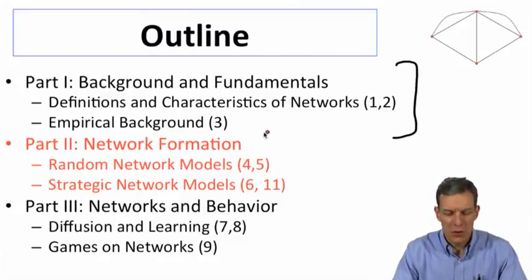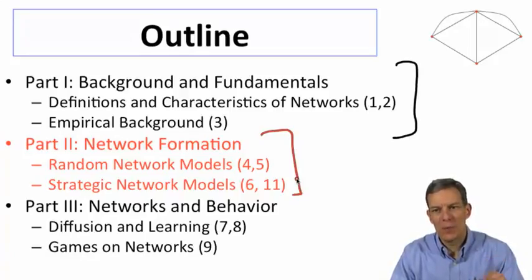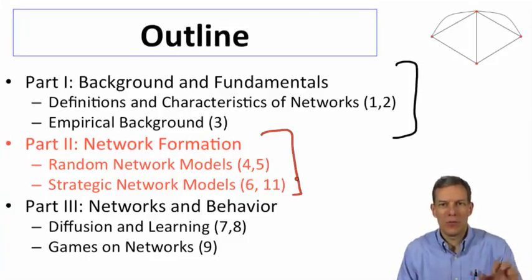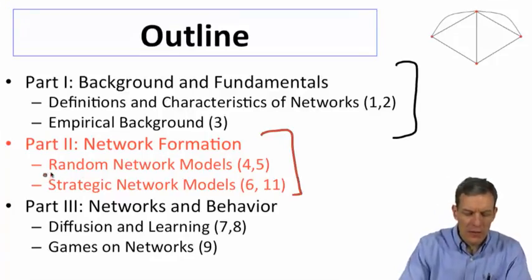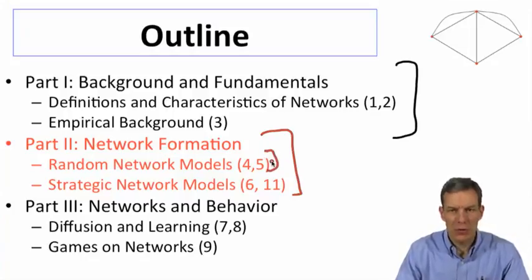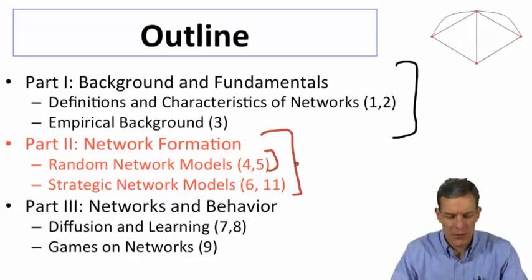And now what we're doing is starting to look in more detail at network formation. We started by asking some of these questions in the context before measuring path length and so forth. We'd looked at the Erdős-Rényi random networks. And here what we're going to do is break things into two different approaches. One is random network models that'll be akin and enrichments of Erdős-Rényi kinds of models.